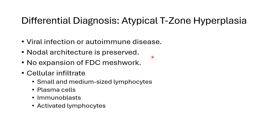The differential diagnosis of AITL includes atypical T-zone hyperplasia, which may occur due to viral infection or autoimmune disease. In atypical T-zone hyperplasia, the nodal architecture is preserved, there is no expansion of the FDC meshwork, and the cellular infiltrate is small to medium-sized with plasma cells, immunoblasts, and activated T lymphocytes.